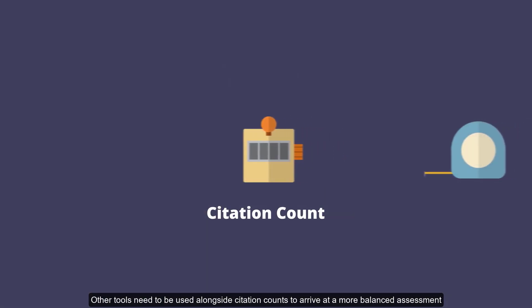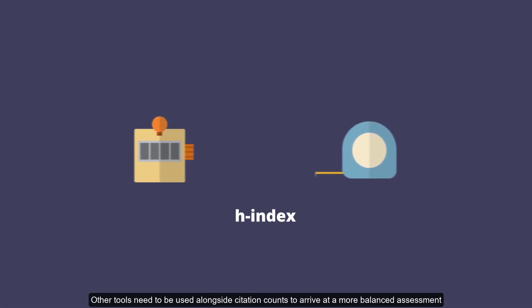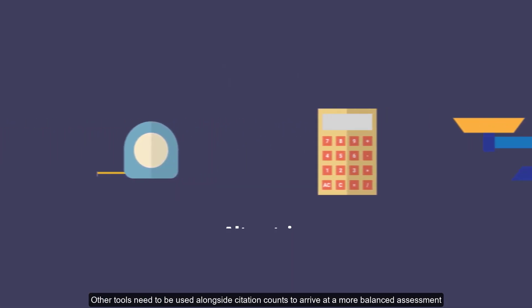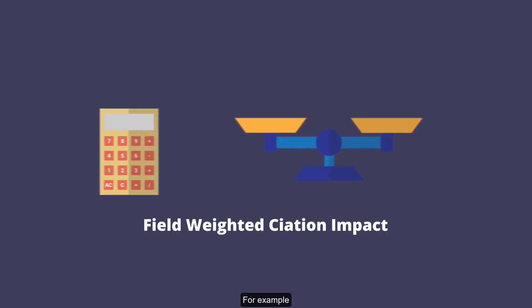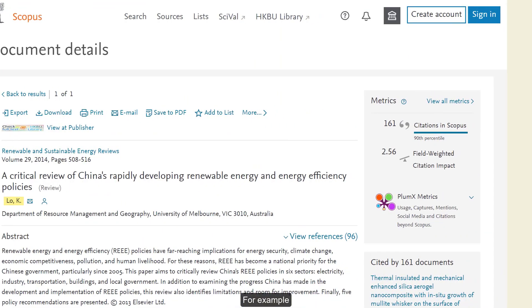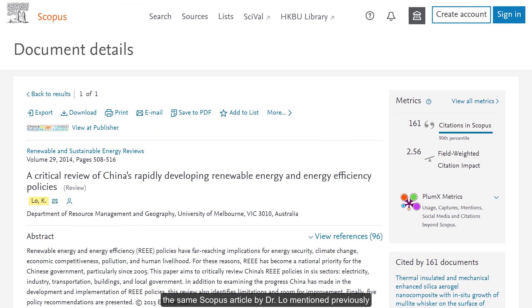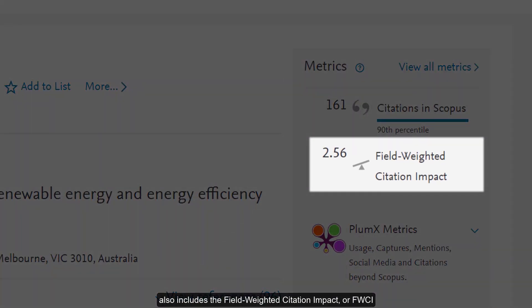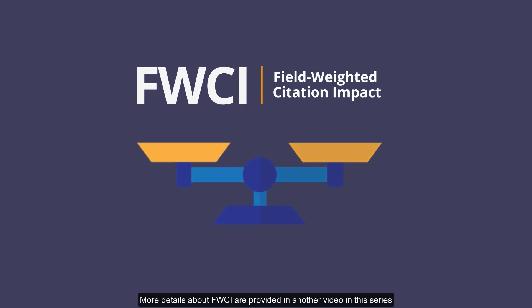Other tools need to be used alongside citation counts to arrive at a more balanced assessment. For example, the same Scopus article by Dr. Lo mentioned previously also includes the Field Weighted Citation Impact, or FWCI, to provide a more balanced view in addition to citation counts. More details about FWCI are provided in another video in this series.